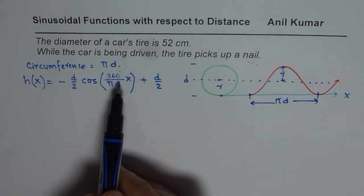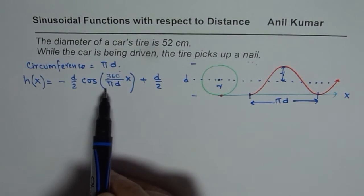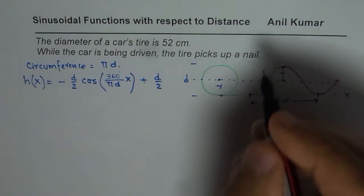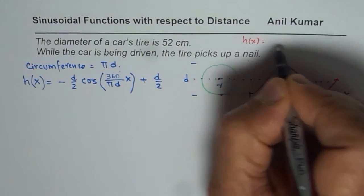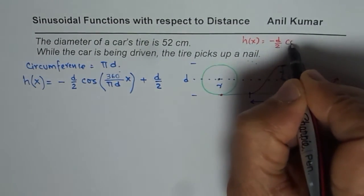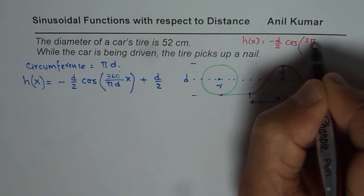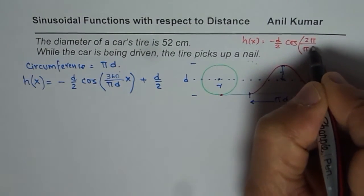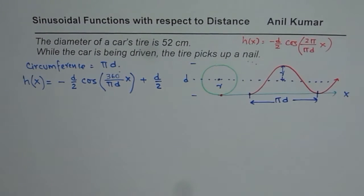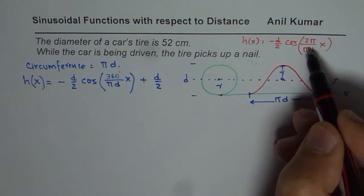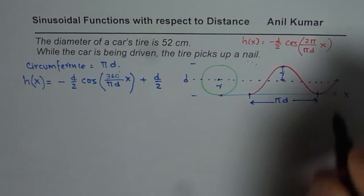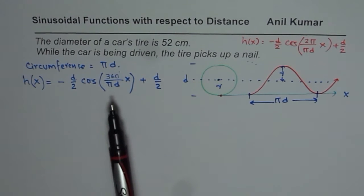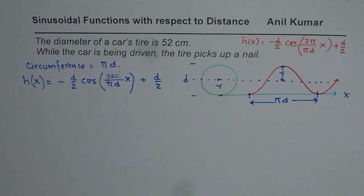In case you are working in radians, then instead of 360, you write 2π. It becomes simpler equation in radians. Since in radians, this equation will be written as h(x) equals to minus diameter half, cos of 2π over πd times x, plus half of diameter. That is going to be the equation in radians. We'll continue to work with degrees for the time being.